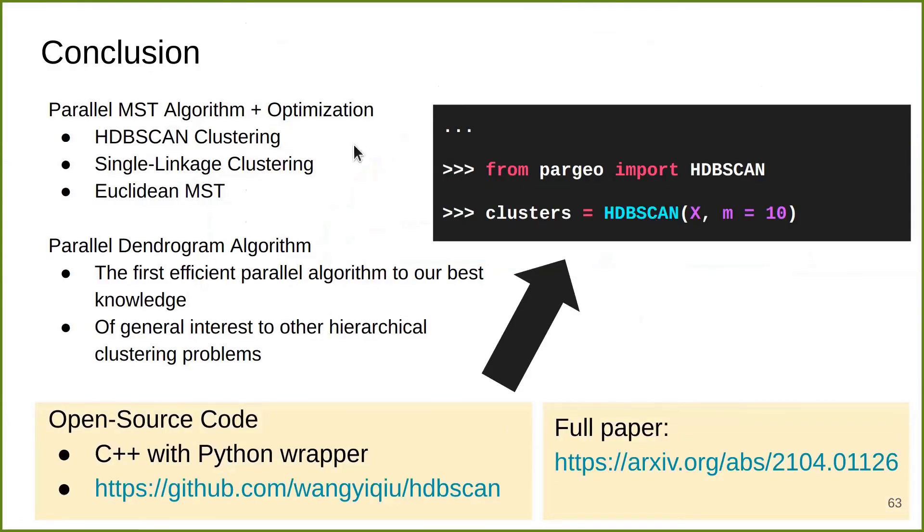Here's my conclusion. This is a recap of our contributions. We designed parallel MST algorithm and dendrogram algorithm for HDBSCAN and Euclidean MST. We open source our code on GitHub. Here's the link. It's written in C++ with a nice Python wrapper, so you can just call our code in two lines of Python while enjoying high performance on multiple cores. Please also check out our full paper on the archive. Thank you.